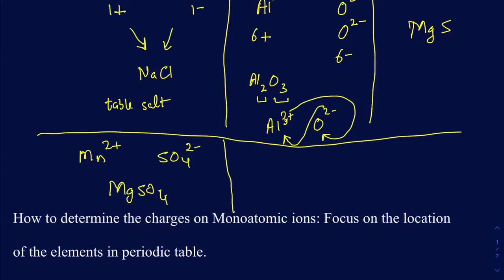Let's take another example. What if I have magnesium and chloride? Magnesium is 2+ and chloride is 1−. To balance the 2+ charge on magnesium, I need a total of 2−, so I would need two chlorides. When you put them together, the formula is MgCl₂.